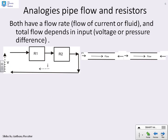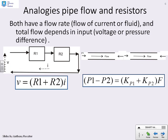What are the analogies, then, between pipe flow and resistors? So again, both have got a flow rate, flow of current or fluid, and the total flow depends on the input, which is the voltage or the pressure difference. Let's look at the equations. You'll see for the electric circuit I had a voltage supply. I added the two resistances in brackets and multiplied that with the current flow in order to get the model. So voltage equals the sum of the resistances times the current flow.